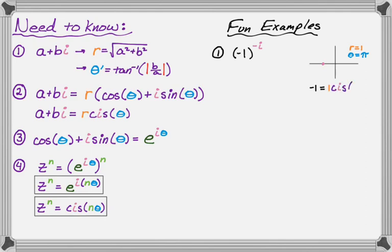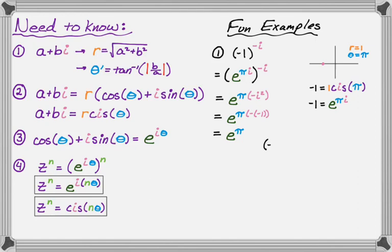So I can actually rewrite it as negative one equals one cis pi, and then negative one equals e to the pi i. Once I've done that, I can go back and simplify this thing. So I'm going to replace negative one with e to the pi i, and then that's to the negative i, which becomes e to the pi negative i squared, because power to a power, you multiply the exponents. And then i squared is negative one. So we get this, and then negative negative one is just one. So it turns out that the quantity negative one to the negative i is equal to e to the pi.